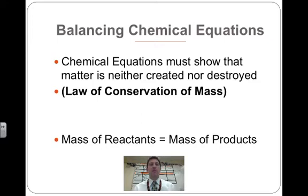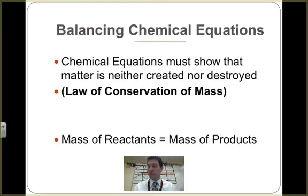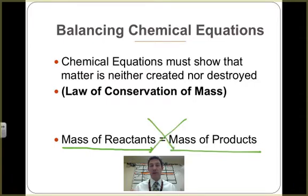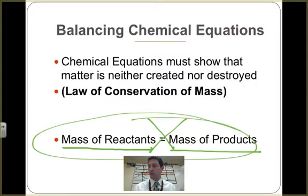Just some quick background information. We have to balance chemical equations because they must show that matter is neither created nor destroyed. This is a law of conservation of mass, conservation of matter. In fact, one of the steps that I'm going to give you shows that we have to show that the mass of reactants is equal to the mass of the products every single time. If we haven't done this, then we know that our answer is not yet correct. Once we've done this, we know our answer is correct.